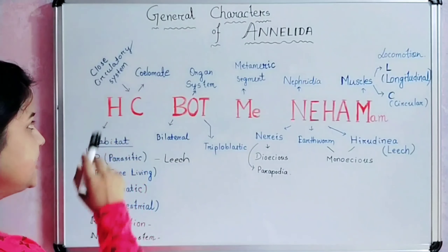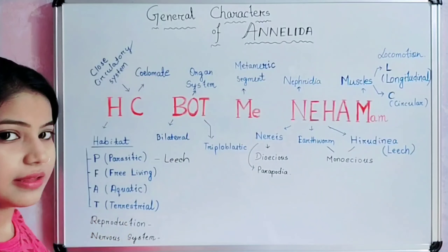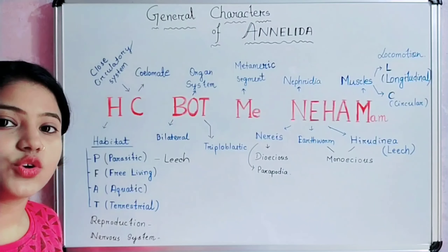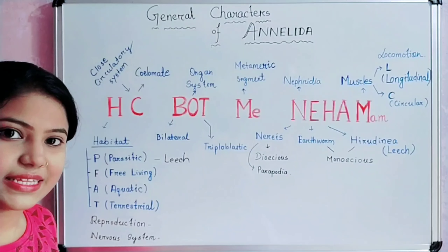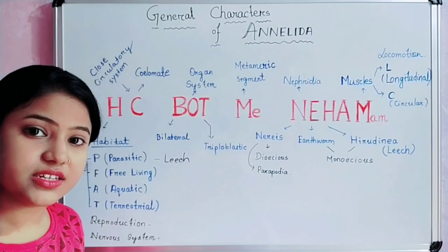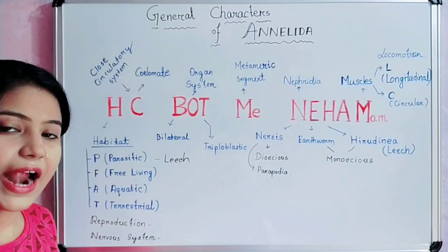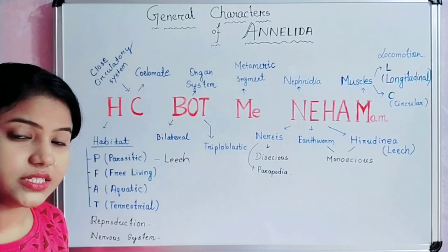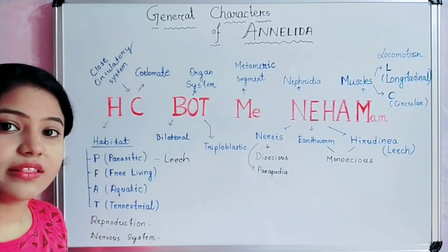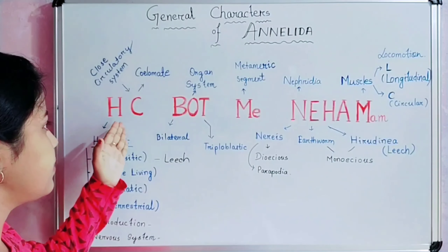The next point is C. C means Closed circulatory system — the blood flows through vessels, which are capillaries and arteries. The blood flows through arteries and capillaries. But in an open circulatory system, there are no vessels.